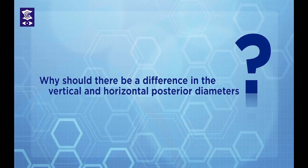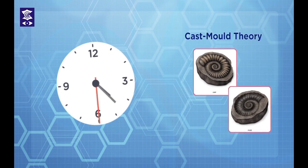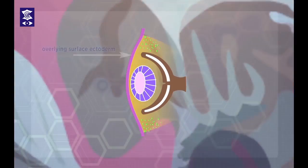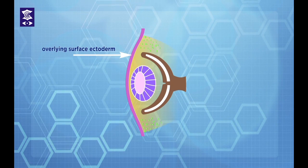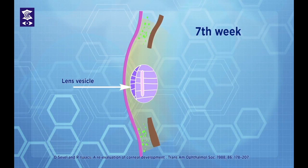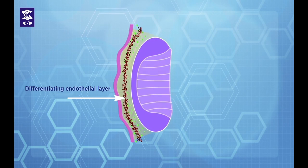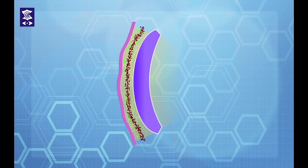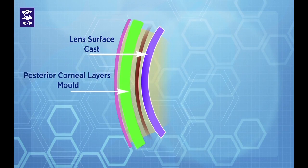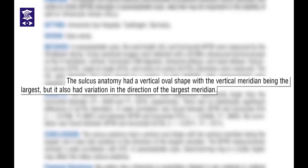The next question is: why should there be a difference in vertical and horizontal posterior corneal diameters? To understand this, we go back to embryology, proposing a 'cast mold theory' to explain the origin of the cornea. Around the 33rd day of gestation, the overlying surface ectoderm — the future epithelium — appears to mirror the shape of the developing lens vesicle, which is round at this time. Later, around the seventh week, the differentiating endothelial layer was shown to lie in close proximity to the anterior surface of the lens, which by this time acquires its biconvex ellipsoid shape. Here, the lens surface acts as a cast and the posterior corneal layers act as a mold.